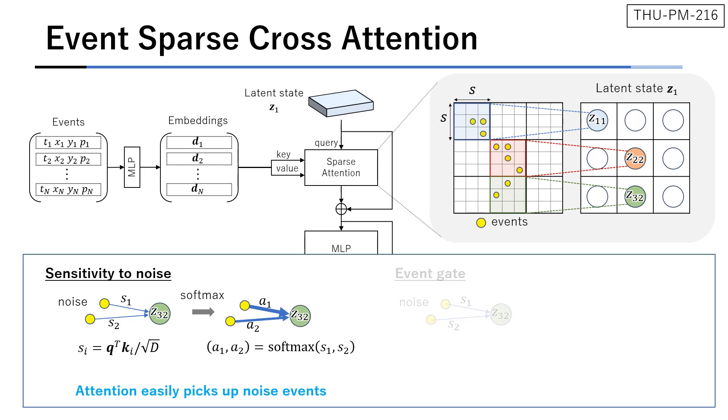To suppress the weights for noises, we introduce an event gate. The learnable gating parameter G is attached. After softmax, the attention weights can be successfully suppressed because the key query similarity is less than the gating parameter G. Finally, the gate is removed before applying the attention.